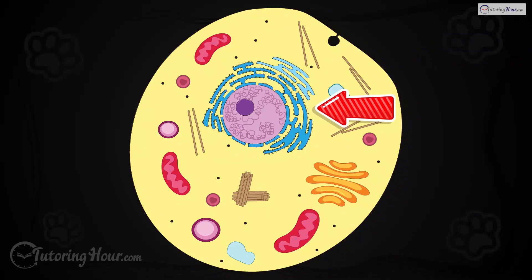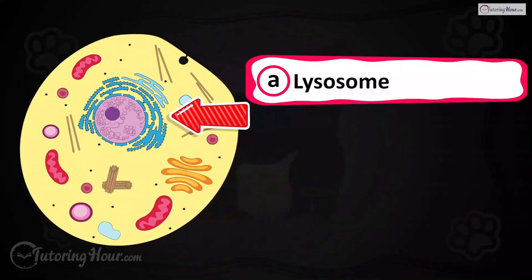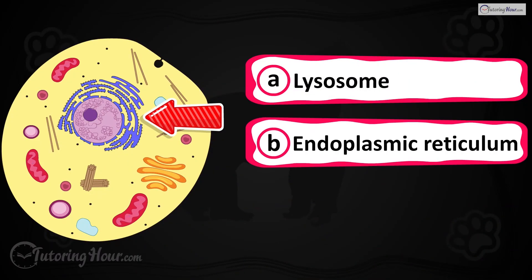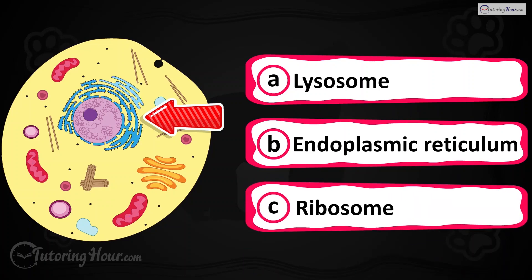Can you identify the highlighted part in the cell? Is it A) lysosome, B) endoplasmic reticulum, or C) ribosome?